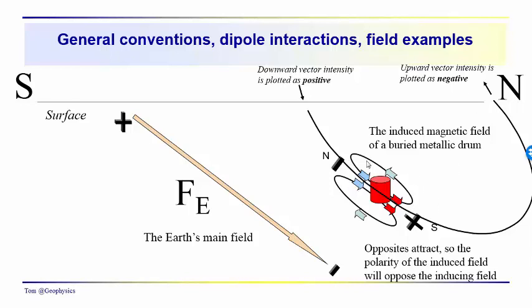If we have a metallic container of some sort, we get an induced magnetic field. We may also have a remnant magnetic field, but we're just considering the induced field. The induced field will take on an orientation which opposes the Earth's main magnetic field. This is basically just an application of that opposites attract.